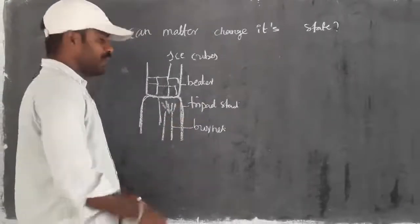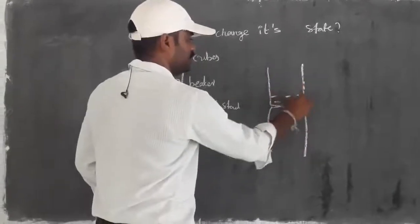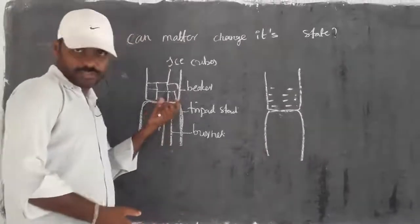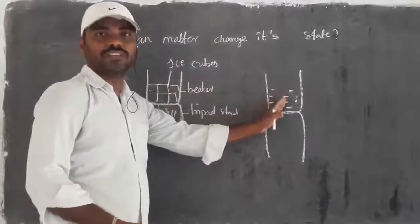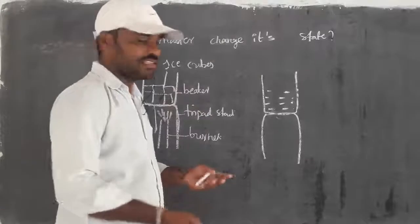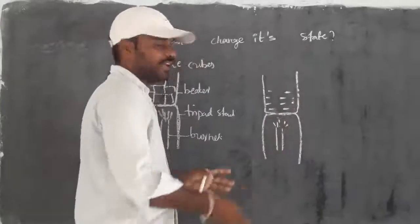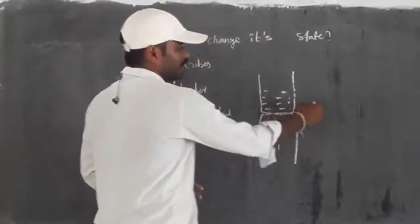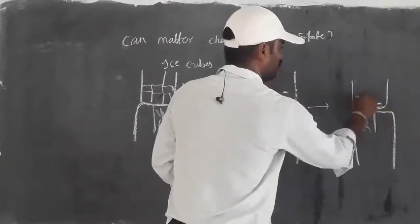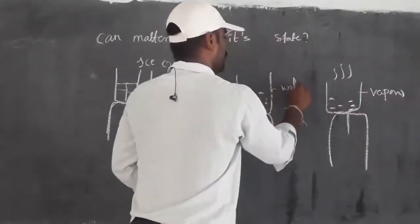On heating, what happens? Simply, it changes into liquid. It indicates that on heating of ice cubes, it changes into liquid — the liquid form of ice we call water. Again, we have to heat further for more time, and after that this water is able to change into vapor.